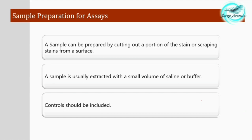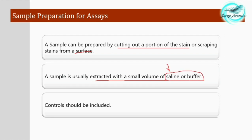Before carrying out any of these species identification techniques, we have to prepare our sample. A sample can be prepared by cutting out a portion of the stain, or scraping it. When stains are dried on a surface, they are extracted with a small volume of saline — usually 0.9% saline — or a buffer such as PBS (phosphate-buffered saline). This extraction usually occurs at room temperature or 37 degrees Celsius.